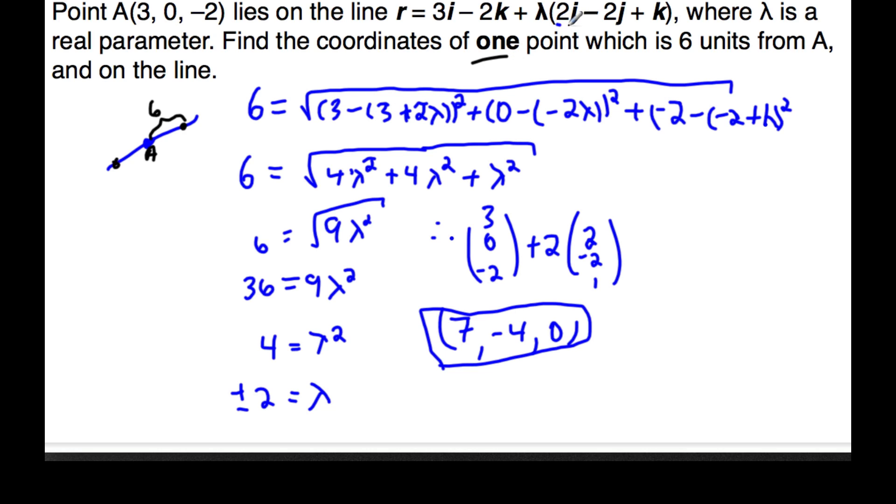This one has a nicer solution using the direction vector. I'll show you here in green. The magnitude of the direction vector, 2 squared, 2 squared, 1 squared, 2, 4, right? 4, 8, 9, root of 9 is 3. It has a length of 3.